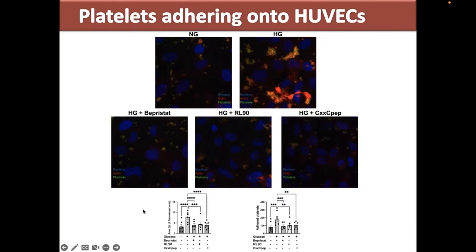This is the most important experiment of this project so far. We collected blood from healthy donors, washed platelets, and left them to stick on top of a HUVEC monolayer — similar to what Camilla was showing, but in this case static. Normal glucose cells are in the upper left and high glucose cells are in the upper right. You can see that the amount of adhered platelets is increased in high glucose, with platelet aggregates or thrombi.